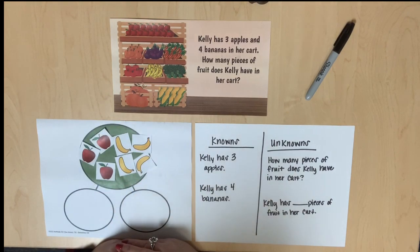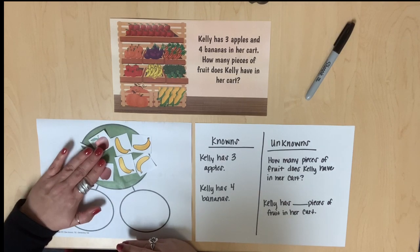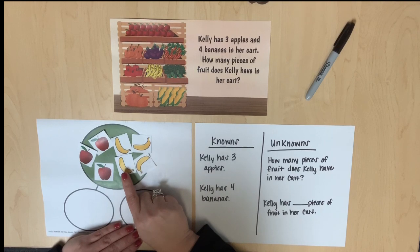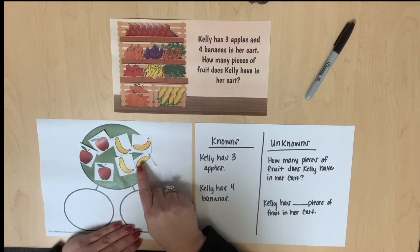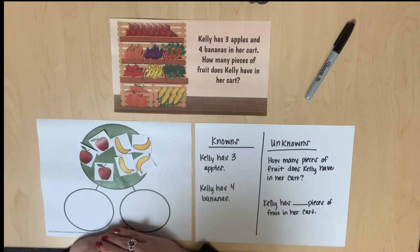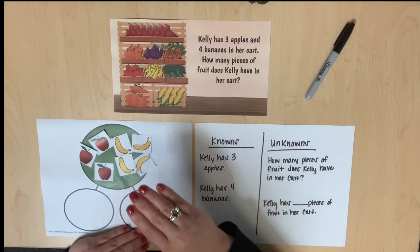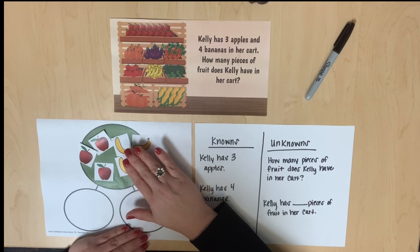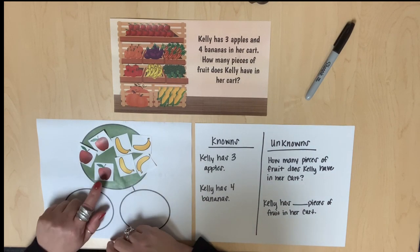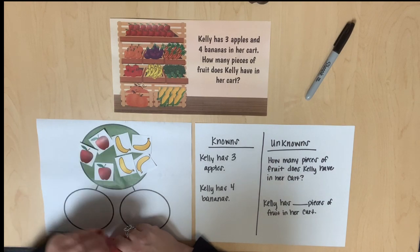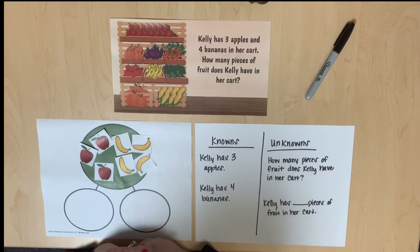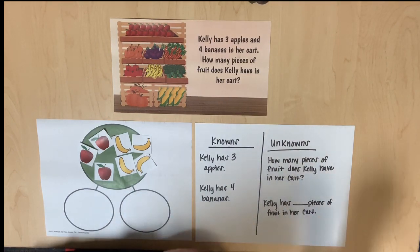If we use a counting strategy to determine the number of pieces of fruit in Kelly's cart, we would point to the three apple picture cards and say three, and then point at each banana picture card and count on: four, five, six, seven. If we use a counting strategy and count on from the greater quantity, we would point to the four banana picture cards and say four, and then point at each apple picture card and count on: five, six, seven. Ultimately, we can count on from either part and conclude that Kelly has seven pieces of fruit in her cart.